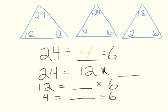For the third number sentence: twelve equals blank times six. What number times six equals twelve? Using this triangular fact card, the answer is two.